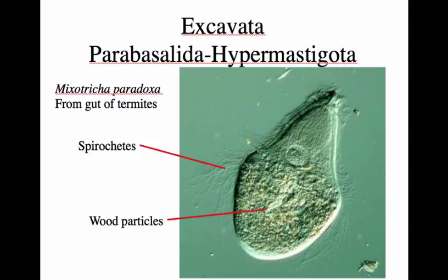The sister taxon to the termites are the roaches, and the basal or more primitive forms of termites have a cockroach-like appearance. Mastotermes is one of these roach-like termites from northern Australia. Mixotricha paradoxa—living in the guts of these termites—is what allows them to get energy from eating wood. Cellulose, the main component of wood, is not digestible by most animals like humans, who lack the cellulase enzymes needed to hydrolyze the bonds holding together the sugar molecules in the cellulose polymer.